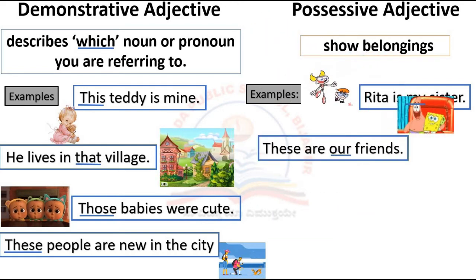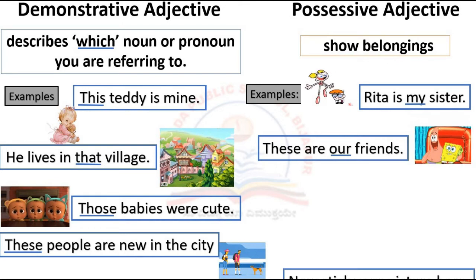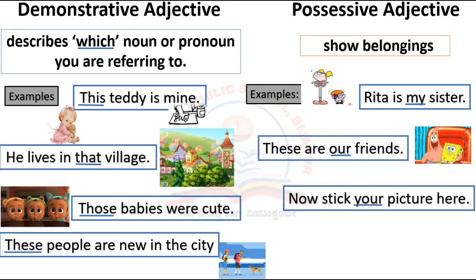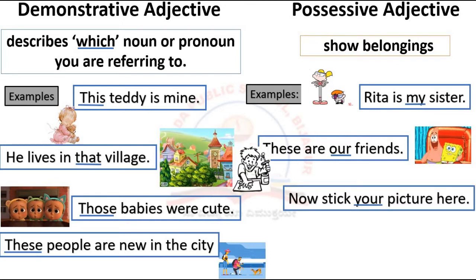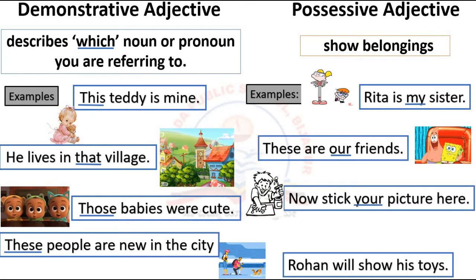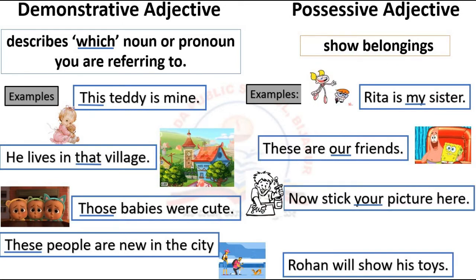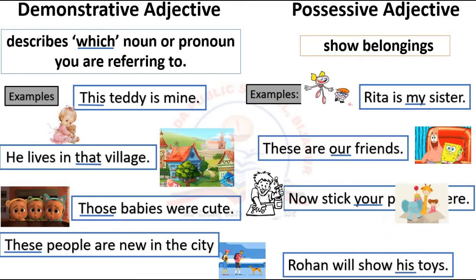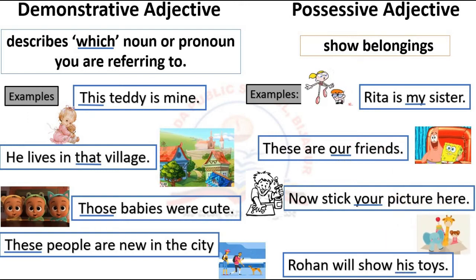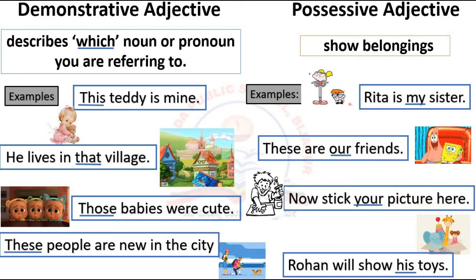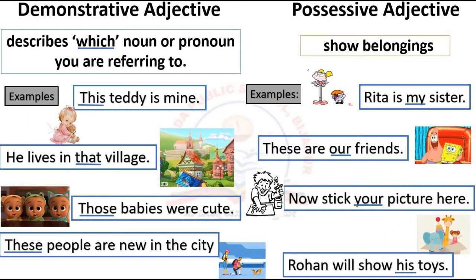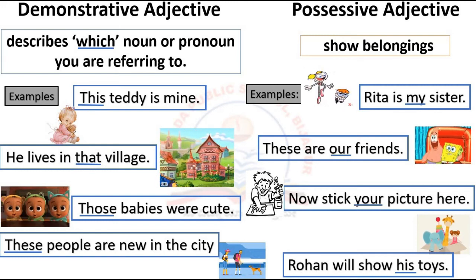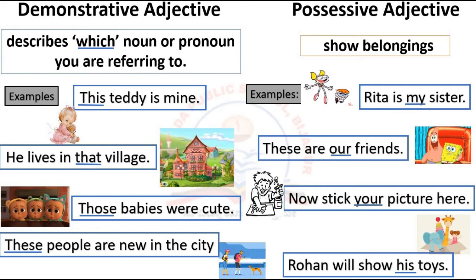Possessive adjective shows belonging. Examples: 'Rita is my sister.' 'These are our friends.' 'Rohan will show his choice.' The underlined words in these sentences are possessive adjectives.